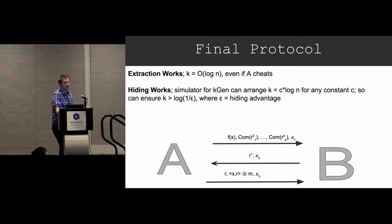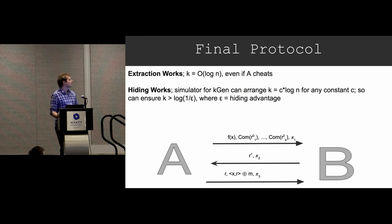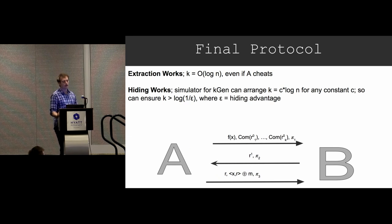The final protocol is going to be secure because extraction will work — even if Alice cheats during the K-generation subroutine, K is going to be small — and hiding is going to work because there's a simulator that can arrange K to be large enough.